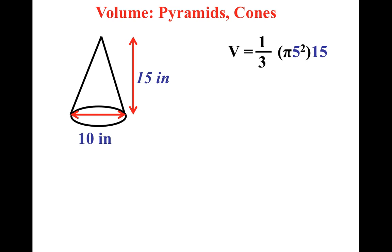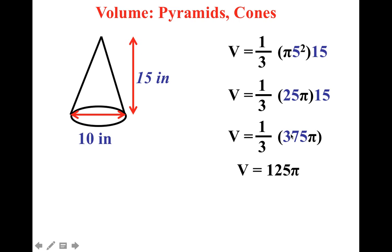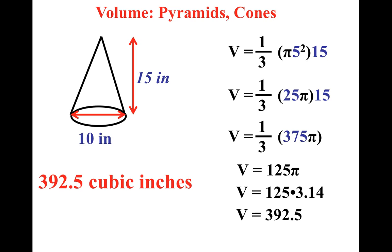All right, so we've plugged in the numbers. Now, let's get the answer. Now, in this situation, you'll notice I multiplied these together and got 375. Now, when I divide by three, I get 125. Also, I could have simplified, divide by three, and divide by three, and done 25 times five, which also would have gotten me 125 pi. All right, when I multiply by 3.14, I get 392.5 cubic inches.